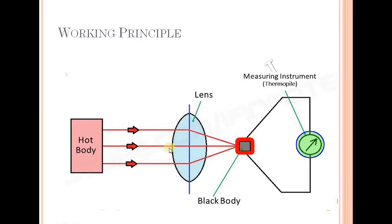The radiation sensor uses a lens to focus radiation onto a point. That point is the black body, which means the thermocouple. So we can use thermometers, and the thermopiles are connected to the measuring instrument.